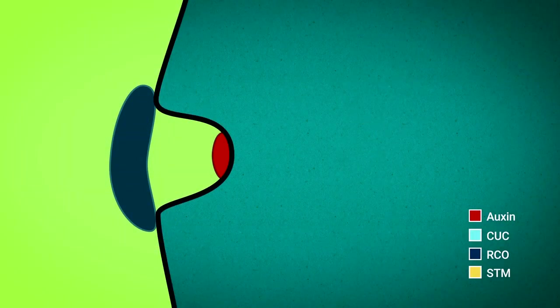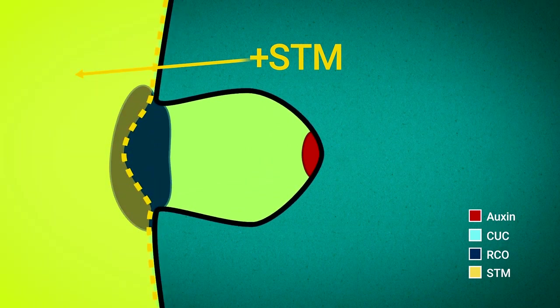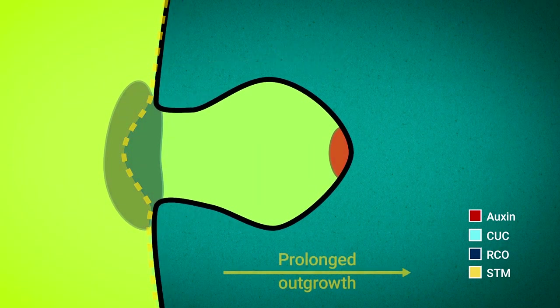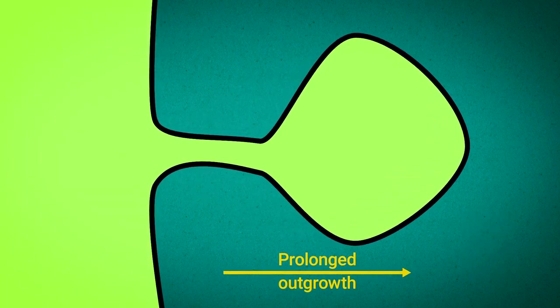The other gene is called STM and acts more broadly while it likewise represses growth STM also prolongs it. This allows outgrowths to grow longer giving rise to large leaflets.